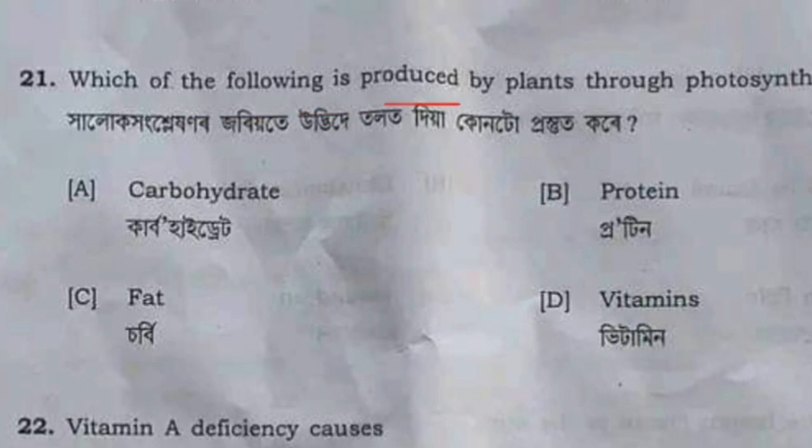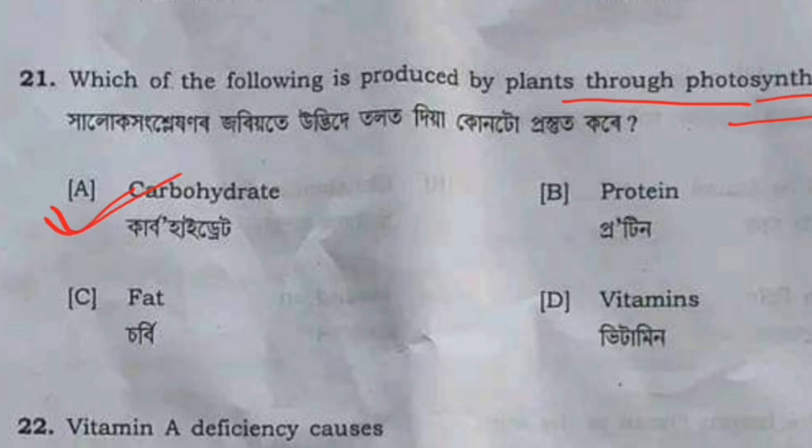Which of the following is produced by plants through photosynthesis? Option A is the correct answer — carbohydrate.